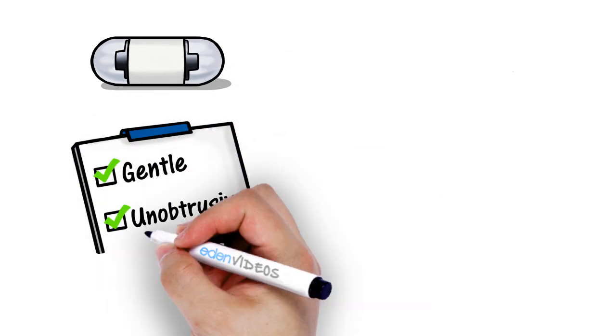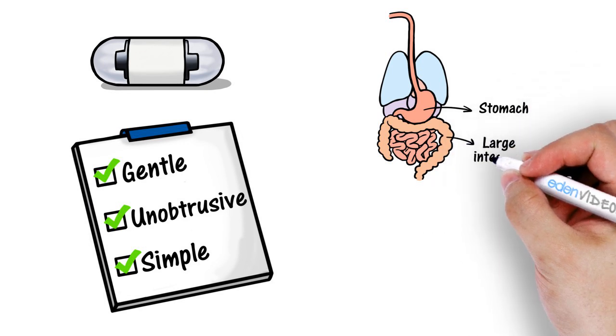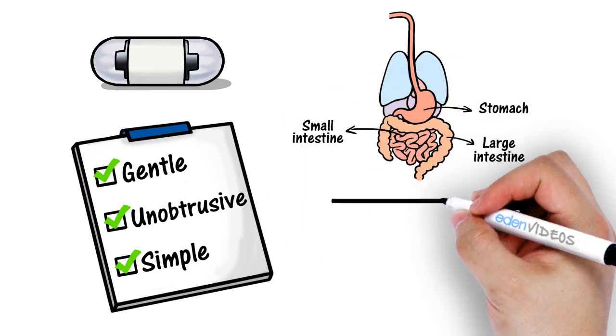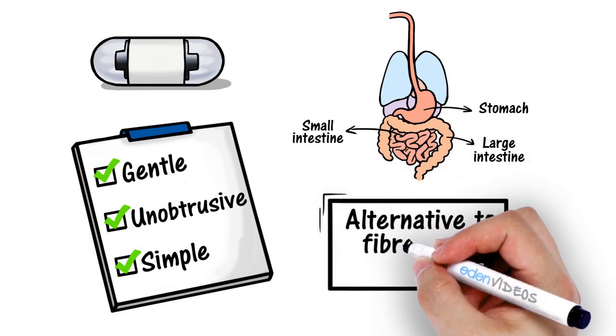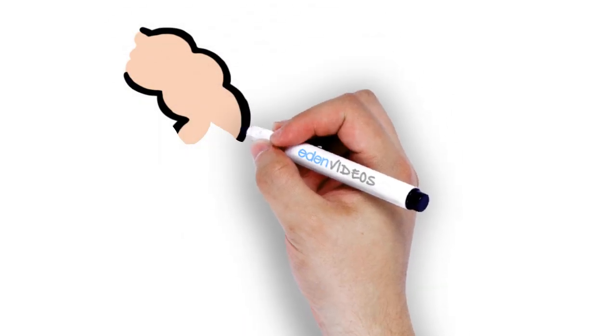Capsule endoscopy is a gentle, unobtrusive, and simple measure that surveys the mucosal surface of the stomach, small and large intestine, and in appropriately selected patients, this scouting device can be considered as an alternative to fibre optic endoscopy.